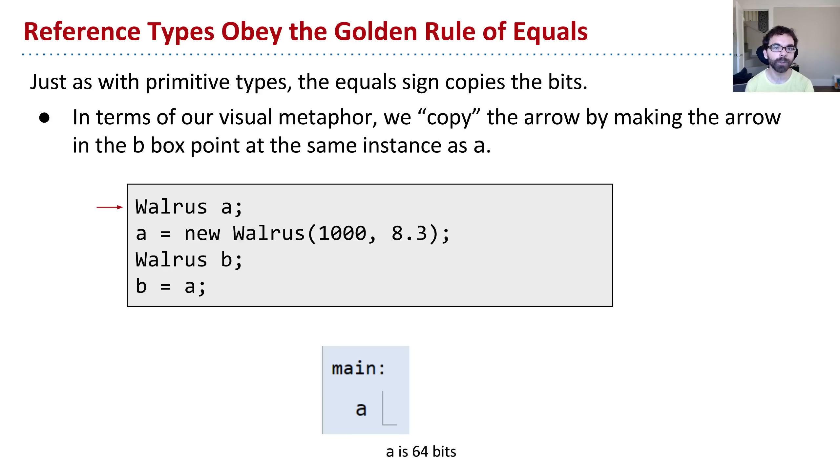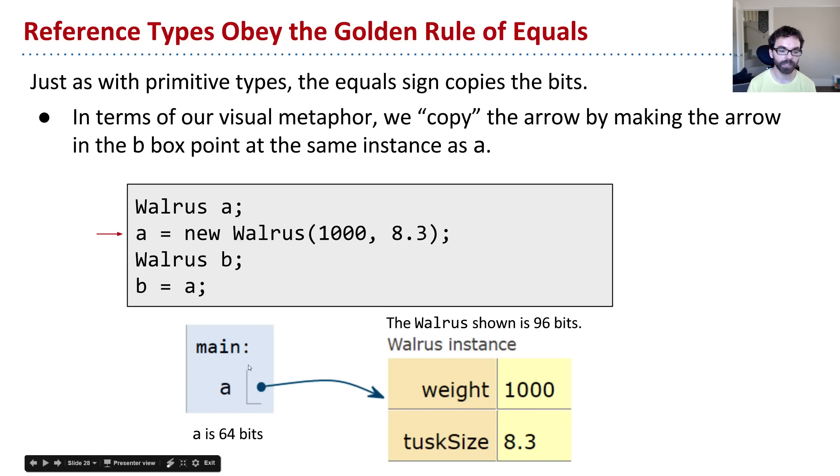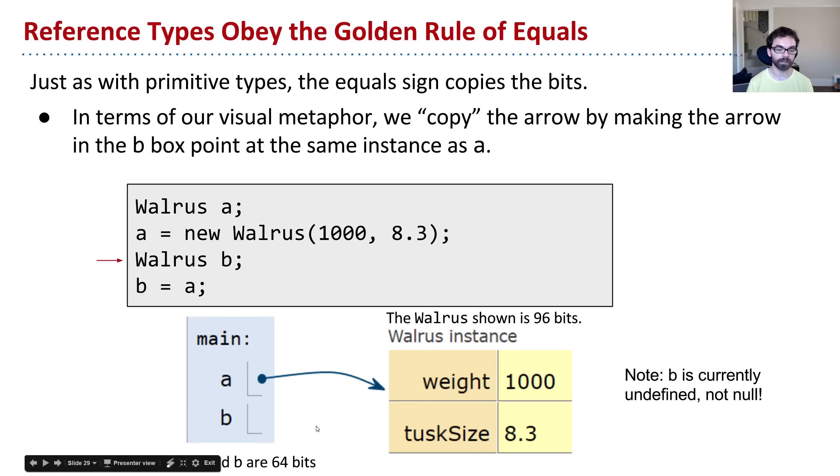So when I say walrus a, what does that do? Well, that creates a box of 64 bits. There it is. And I've only shown it very small. I mean, I could have made a huge box, but we know it's 64 bits because look, it says so right there. Now when I say a equals new walrus, the new keyword goes out to memory, finds the bits it needs, the 96 bits, and it shouts the location which a will dutifully record. So this walrus is 96 bits. The new keyword yellow is the address. We store the address here. And rather than writing out that 64-bit address, we draw an arrow because that's easier to understand. Next up, we say walrus b. This creates a box, which is 64 bits. So both a and b are 64 bits.